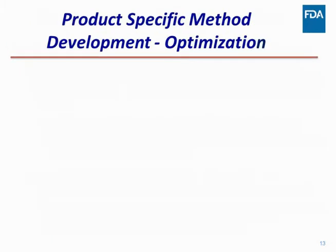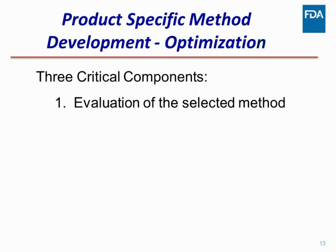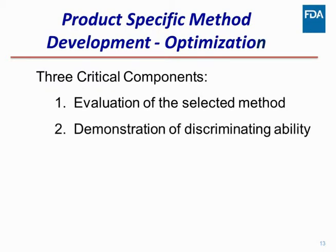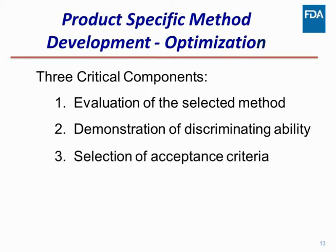So when you have to optimize a dissolution method, there are three elements. The first is evaluation of the method — you select a method and evaluate it. The second, and key element, is demonstration of discriminating ability — this is one way of telling us the method is suitable for your product. The third is selection of acceptance criteria. Remember, we are using dissolution conditions as a quality control tool, and the method is only one element of that. The other element is acceptance criteria. You may spend significant time developing a good method, but if the acceptance criteria are not tight enough and do not mitigate the risk, then the dissolution specifications are not meaningful.